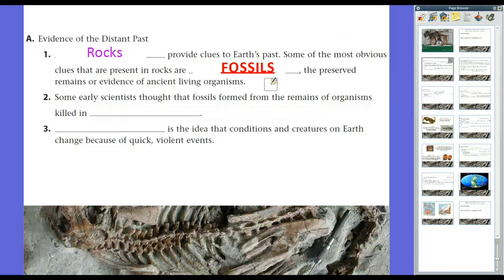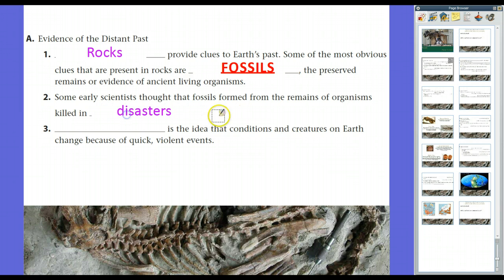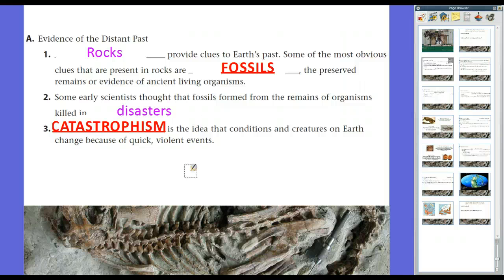Now, some of our scientists thought that fossils formed from the remains of organisms killed in disasters. Volcanic eruptions, giant floods, things of that nature. And they thought that that was the only way that fossils form. And the belief that came out of that was what we call catastrophism, for after catastrophe. Catastrophism is the idea that conditions and creatures on Earth change because of quick and violent events. And when we talk about quick, we talk about quick geologically. We're not talking about one day life is going fine, and then the next day, giant flood, zillions of feet of water burying and drowning everything. We're talking quick geologically. We might talk about months or even years with that.